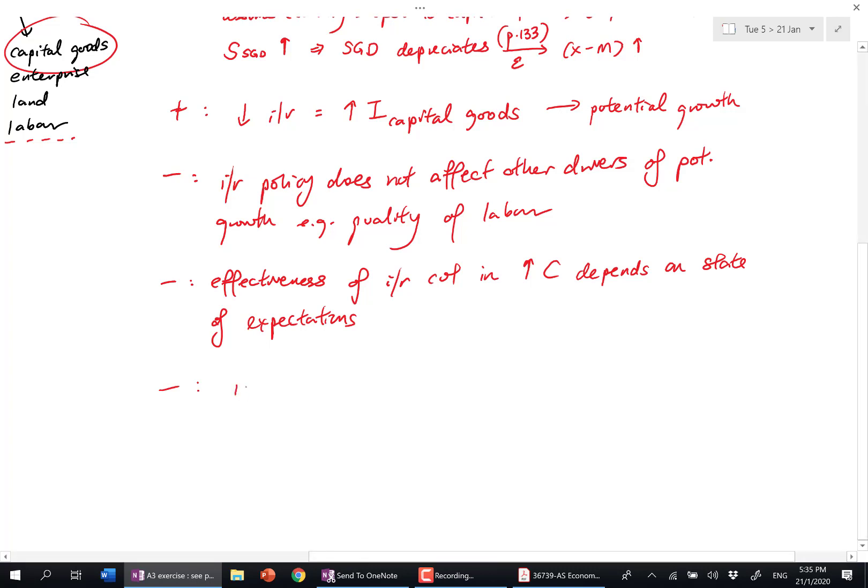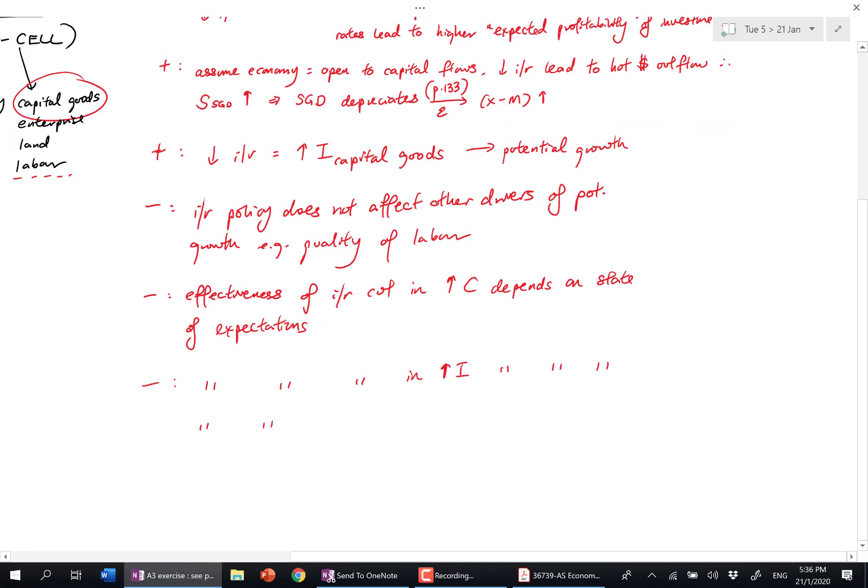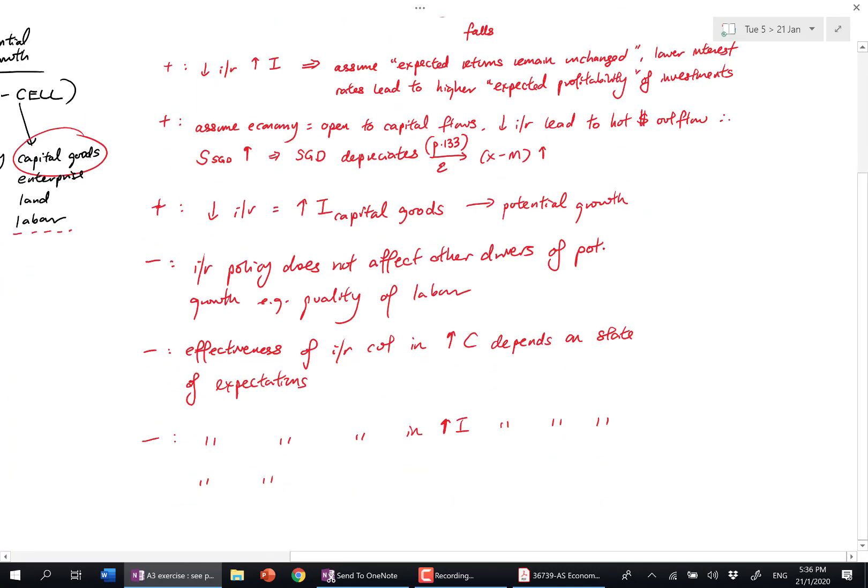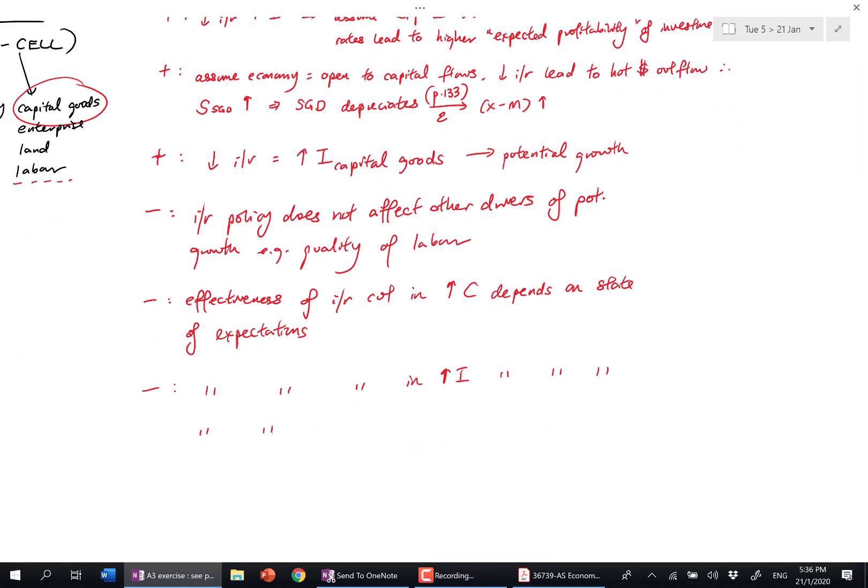Likewise, effectiveness of interest rate cuts in raising I also depends on expectations. We already see seven points from here. So the A3 exercise is about C - you don't need to memorize 10 points in notes, 12 points. If you can see seven points from this breakdown, that's faster.